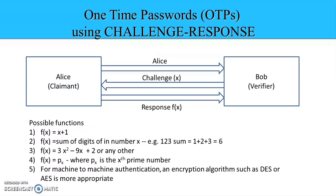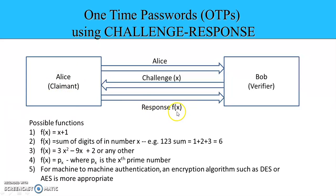For example, if on this side we have a user Alice who tries to authenticate herself to verifier Bob or server Bob, she will send her identity to this verifier. Verifier Bob will send a challenge to her — let us say a number x — and to this challenge, user Alice has to respond with a proper f(x). This function f(x) is a pre-decided function between this user and the verifier.